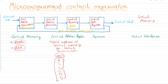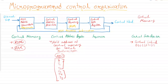We specify the address using the control address register; that address is given to the control memory, and from the control memory the output is sent to the control data register. From the control data register it is sent to various devices in the form of a control word, which acts as a control signal. The control word is a binary variable — a sequence of 0s and 1s — used to specify various micro operations and control the circuit.